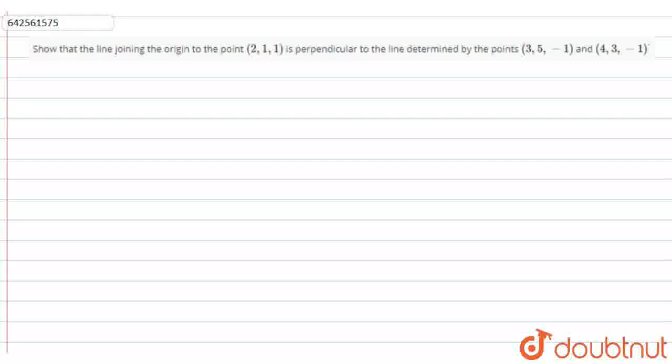Hello guys! Today the question we are going to solve is: show that the line joining the origin to the point (2, 1, 1) is perpendicular to the line determined by the points (3, 5, -1) and (4, 3, -1).